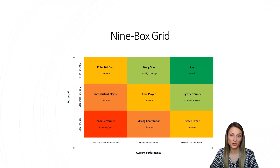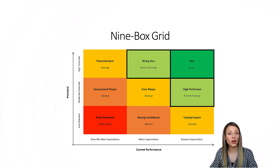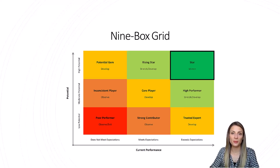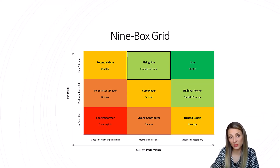Keep in mind that the labels assigned to the nine boxes will vary depending on who creates the nine-box grid. In this graphic, the dark green and two light green boxes denote employees who are ready for development opportunities or for promotion to leadership positions. In the dark green box, we have the stars — the high-performing, high-potential employees who show up every day and go above and beyond their job descriptions.